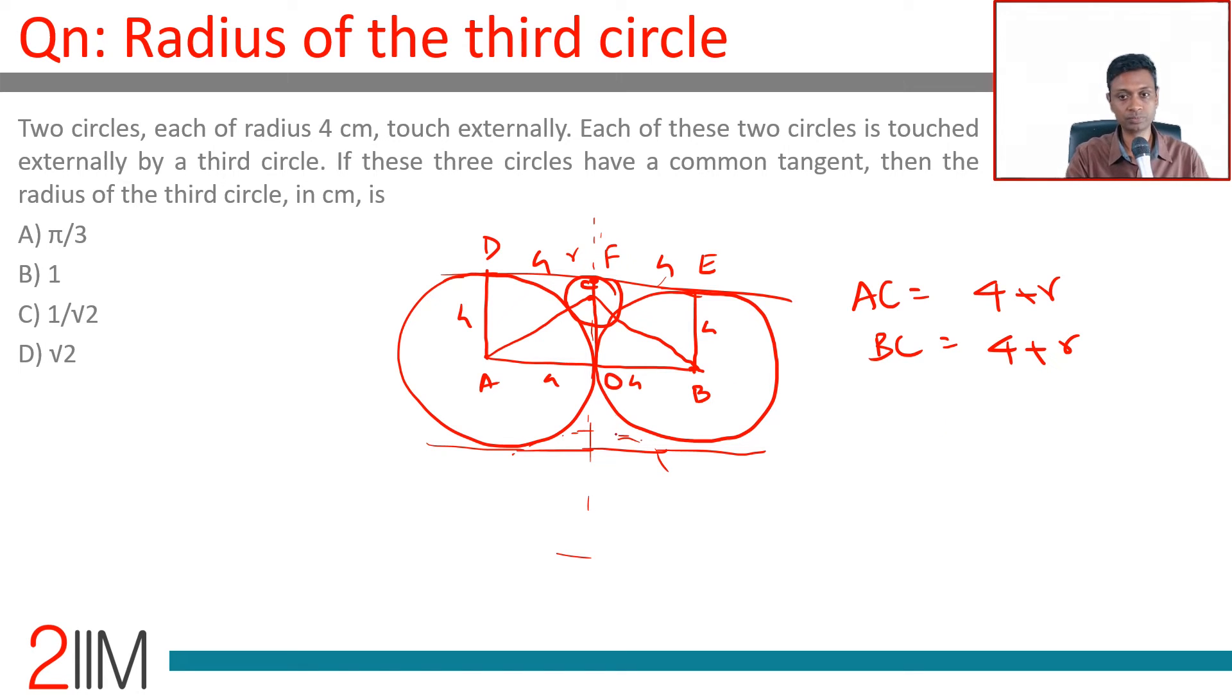Let's say this point is O. OF is 4, OC is 4 minus r. This is r, r, r, 4, 4. The whole thing is 4, so this is 4 minus r. Let's say center of this point is P.